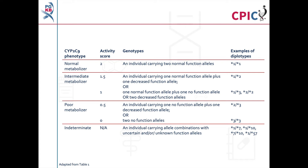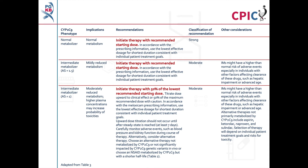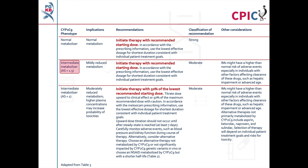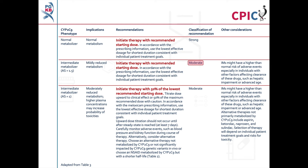Further information about CYP2C9 alleles can be found on the PharmVar website at www.pharmvar.org; a link is also given in the description below. These are the CPIC dosing recommendations for meloxicam as shown in Table 3 of the guideline. Patients with a CYP2C9 normal metaboliser phenotype will have normal metabolism of meloxicam and can begin therapy using the recommended starting dose — this is a strong recommendation. Patients with a CYP2C9 intermediate metaboliser phenotype and an activity score of 1.5 will have mildly reduced metabolism and can also begin therapy using the recommended starting dose — this is a moderate recommendation.